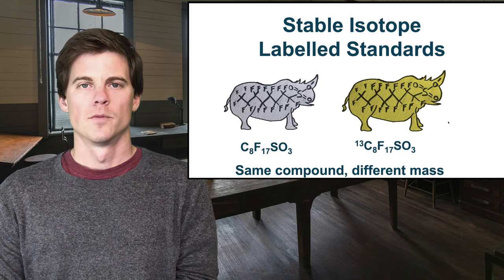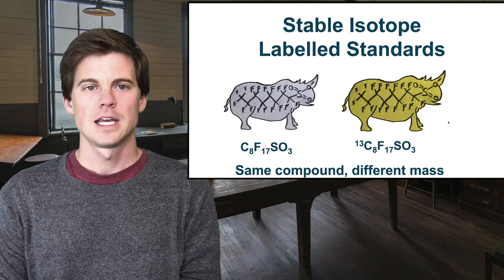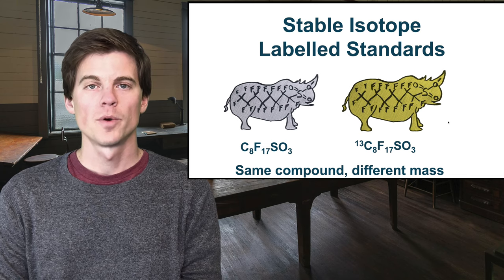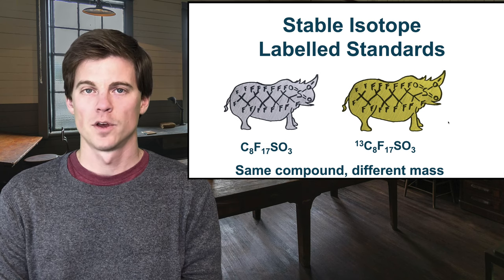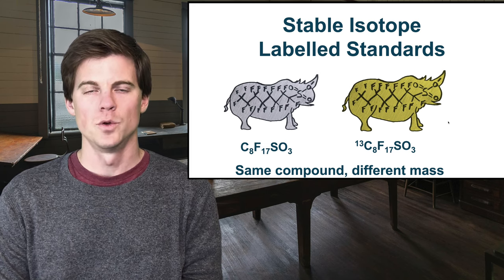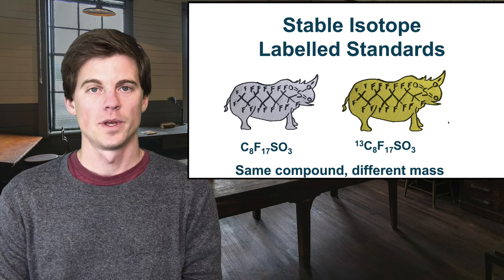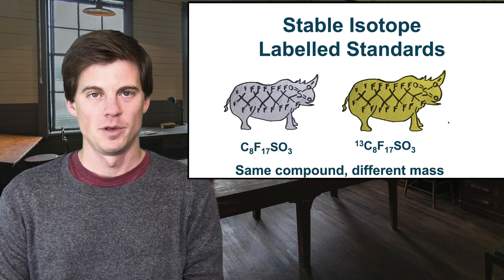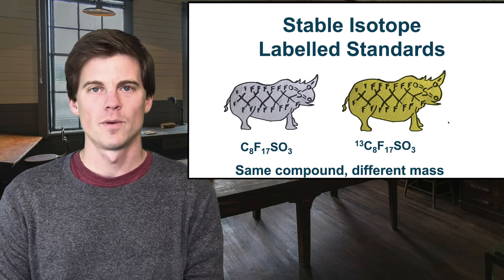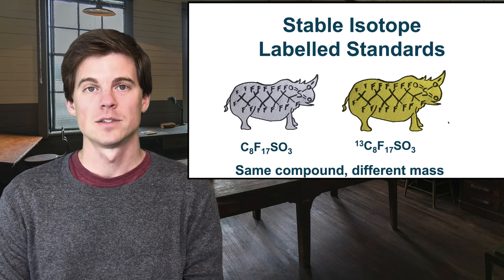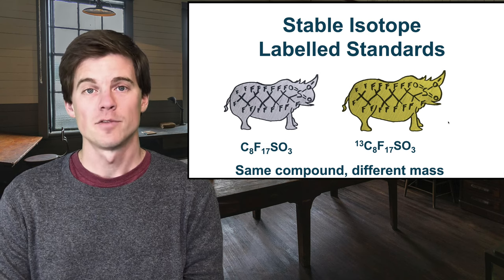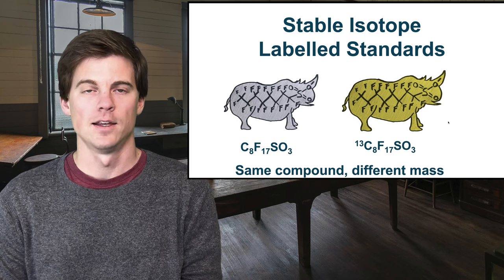So what are internal standards? For PFAS we use what we call stable isotope labeled standards. The stable isotope we usually use is carbon-13. We're pretty much synthesizing the same molecules, but with a few or all of the carbons replaced with carbon-13. Here we have our PFOS — the PFAS rhino you've seen in previous episodes — both in its native form and in its 13C8 form, meaning all 8 of the carbons in its structure have been replaced with 13C, so it's heavier — plus 8 mass units over normal carbon.